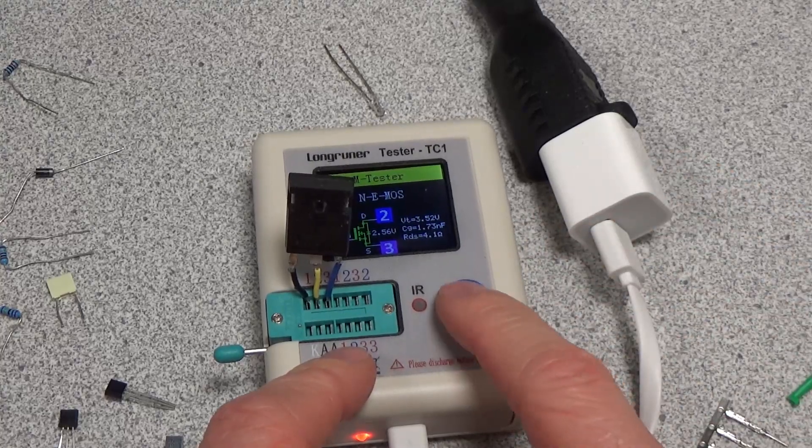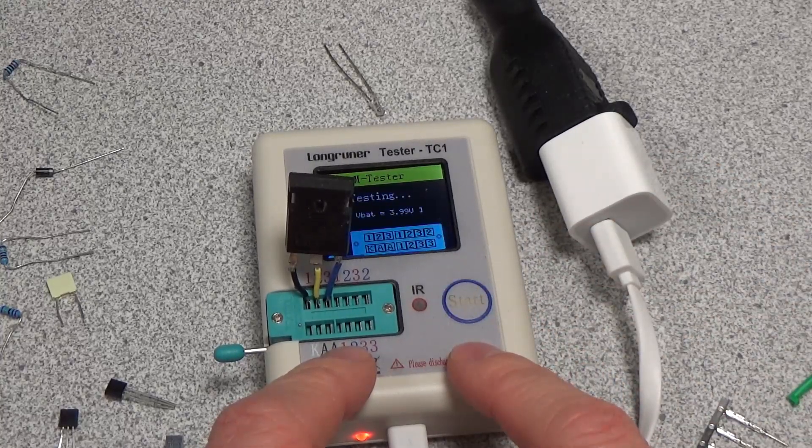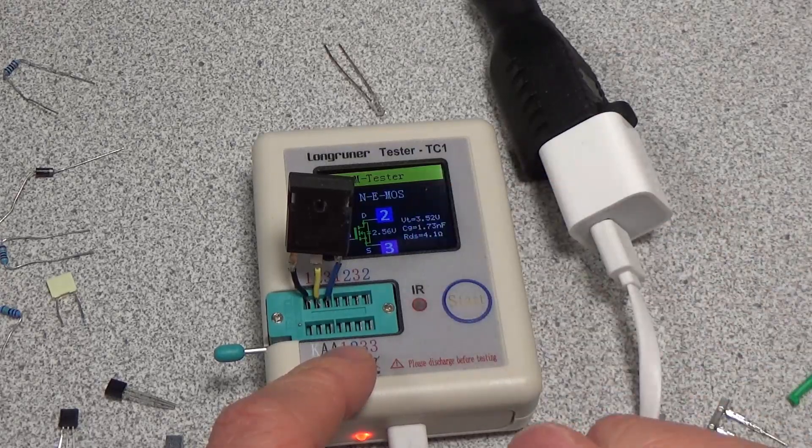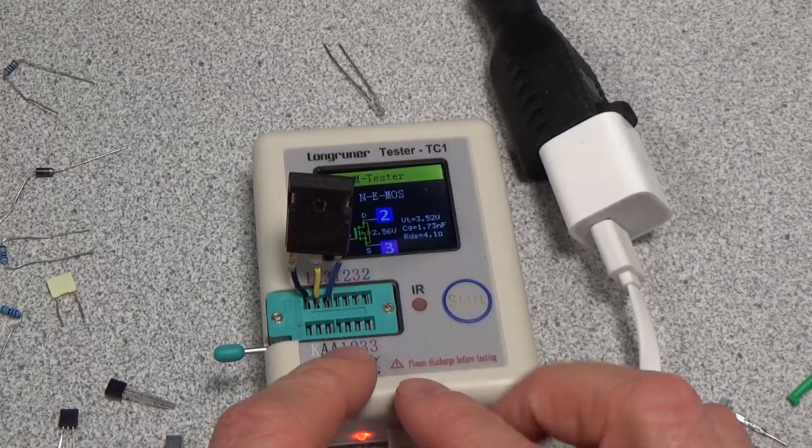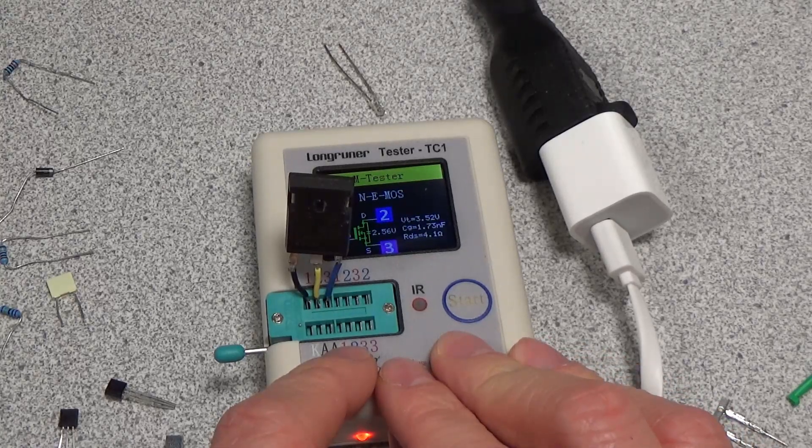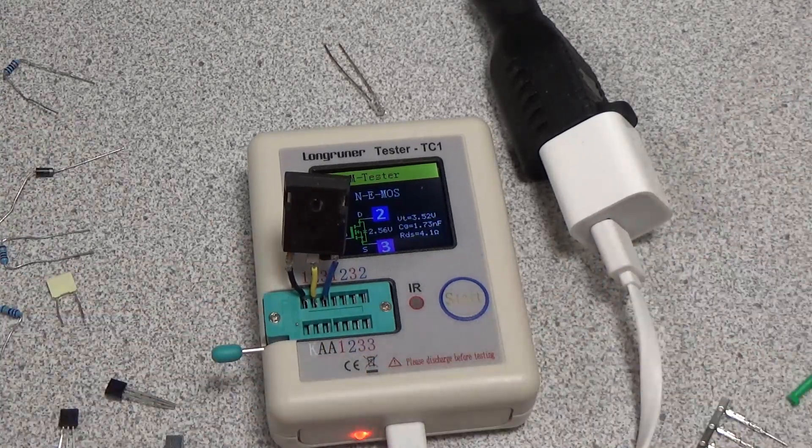So you can see the voltage threshold on this one's 3.52 volts. It's much higher. Let's push it again. And yeah, it's got a 2.56 volt diode which is normal because it's a larger band gap semiconductor. So yeah, it's able to test that no problem.